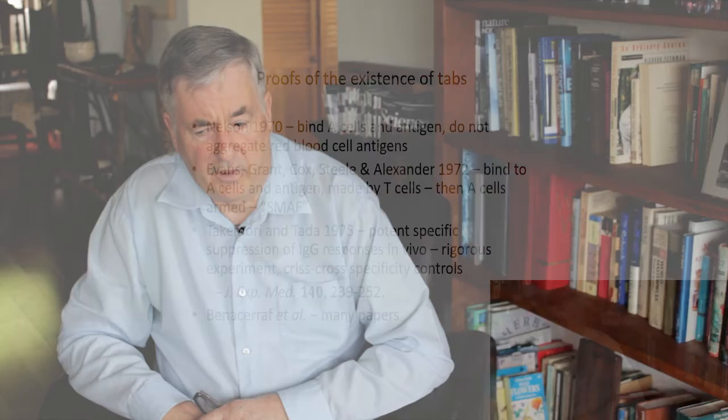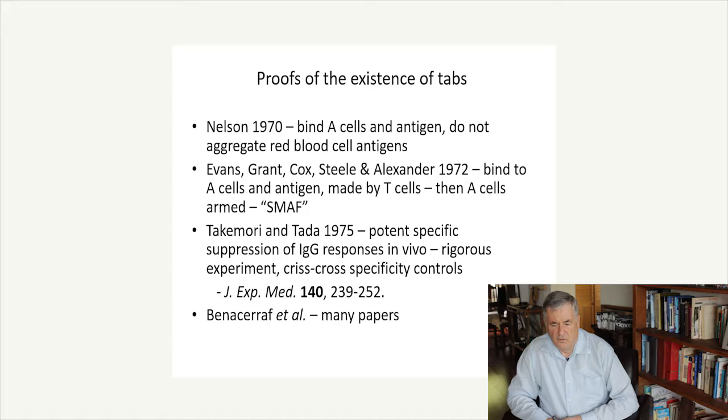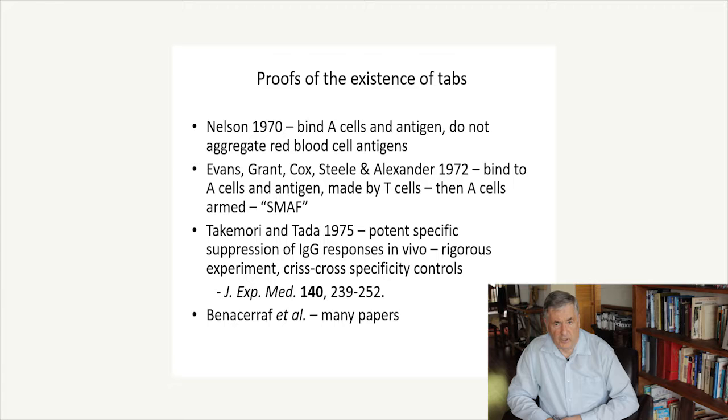They bind to a receptor on the A cells. One of the earliest papers was by David Nelson in 1970 who found that tabs bind to A cells and antigen and they do not aggregate red blood cells when the antigen is in fact a red blood cell. A paper in 1972 by Evans and his collaborators showed that tabs bound to A cells and antigen that it was made by T cells. In their hands they called it specific macrophage arming factor or SMAFF.